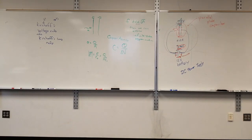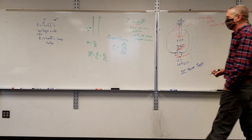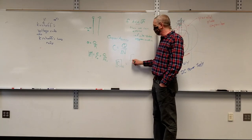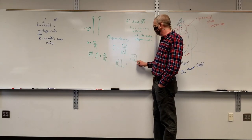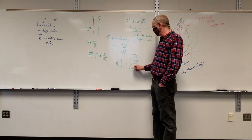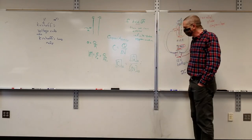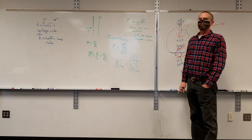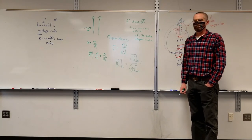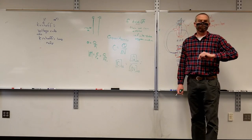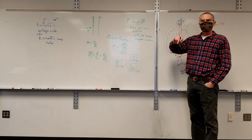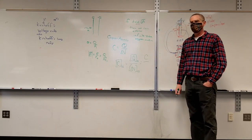Charge divided by voltage. This also brings in the idea that we now have a capital C that does not mean coulombs, but means capacitance. Let's look at units. The SI unit of capacitance would be the unit of charge over the SI unit of electric potential. The international standard unit of charge? Coulombs. The international standard unit of voltage? Volts. So we have coulombs per volt — which is a farad.